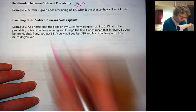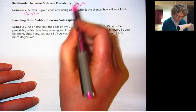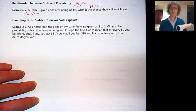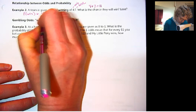So in order to find the probability that they win, we need to figure out the total number of chances here. So we're going to take four plus seven, and that's eleven. So the probability of winning is actually four out of eleven.